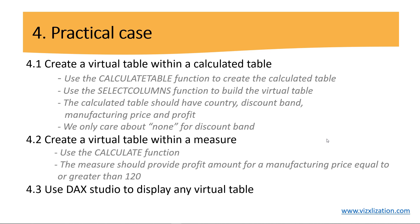It's time to put everything into practice. We have three questions. Question one: create a virtual table within a calculated table — use CALCULATETABLE and SELECTCOLUMNS, with columns for country, discount band, manufacturing price, and profit, filtered to 'None' for discount band. Question two: create a virtual table within a measure using CALCULATE, providing profit amount where manufacturing price is equal to or greater than 120. Question three: use DAX Studio to display any virtual table. Let's go to Power BI Desktop.